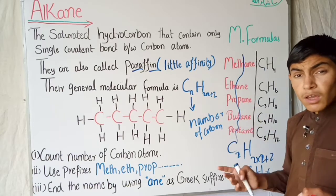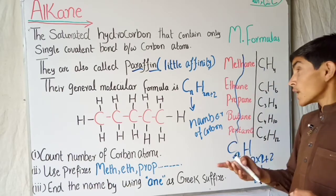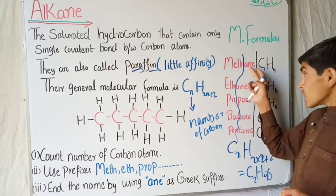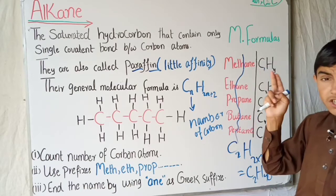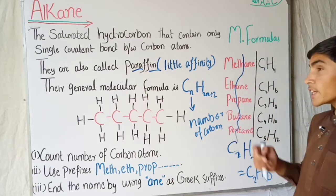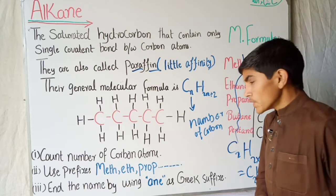The suffix changes because the bonding changes — in alkenes there is a double bond and in alkynes there is a triple bond, so their suffix is changed to '-ene' and '-yne' respectively.